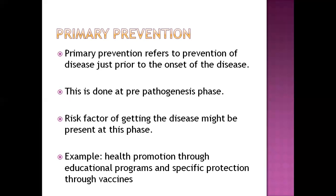Examples for primary prevention include health promotion through educational programs and specific protection through vaccines. We can promote health so that the risk of getting the disease can be lessened. Specific protection refers to vaccines — for example, if I have a risk of getting influenza and I take a vaccine against influenza, then I can be protected.